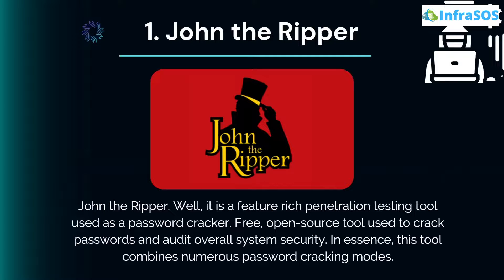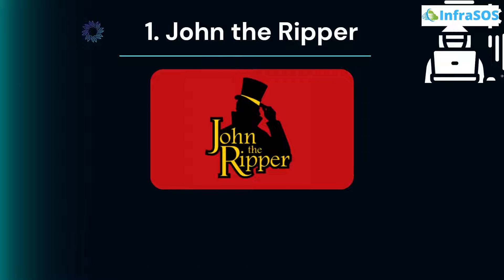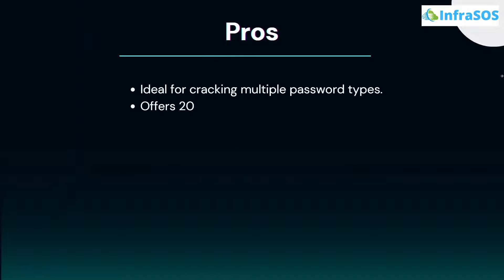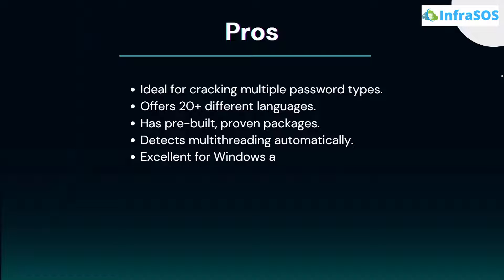John the Ripper is a feature-rich penetration testing tool used as a password cracker. It is a free, open-source tool used to crack passwords and audit overall system security. In essence, this tool combines numerous password cracking modes. Some of the pros include that it is ideal for cracking multiple password types, it offers 20+ different languages, and it even has a pre-built proven package.